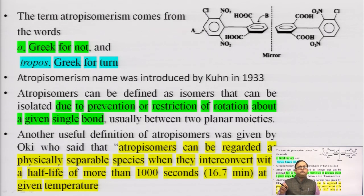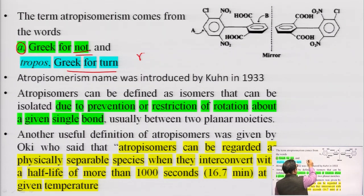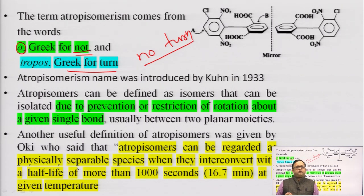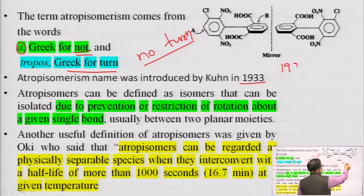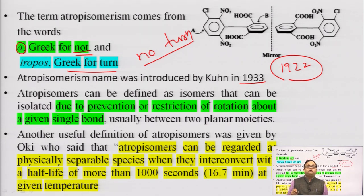The term atropisomers arises from two words: 'a' and 'tropos'. 'A' stands for 'not' and 'tropos' means 'turn' — meaning without turn or no rotation. The literary meaning of atropisomers is that there is no rotation. The word atropisomers was introduced by Kuhn in 1933, about 11 years after Christie and Kenner had already separated such isomers in 1922.